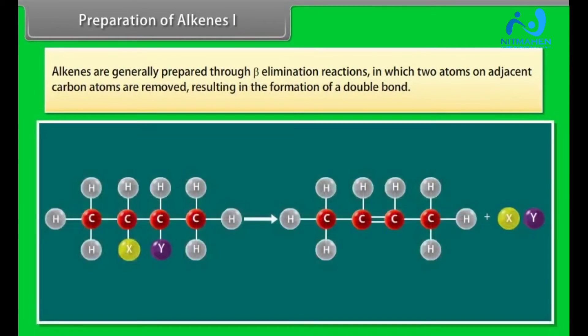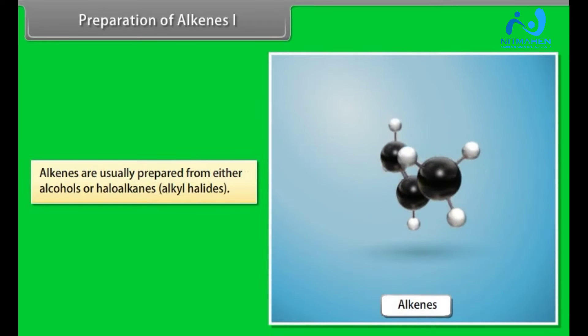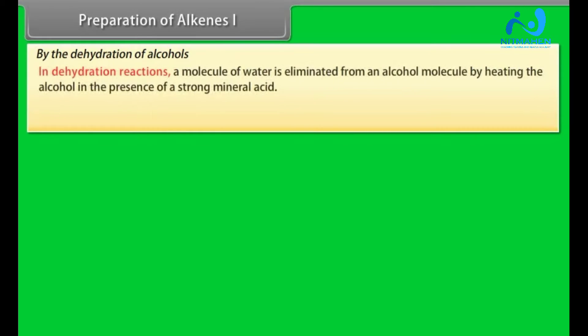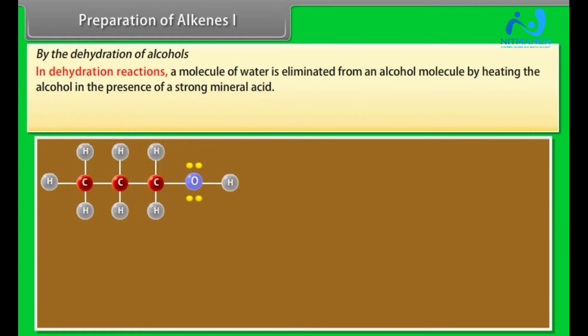Preparation of Alkenes. Alkenes are generally prepared through beta-elimination reactions in which two atoms on adjacent carbon atoms are removed, resulting in the formation of a double bond. Alkenes are usually prepared from either alcohols or haloalkanes, alkyl halides, by the dehydration of alcohols. In dehydration reactions, a molecule of water is eliminated from an alcohol molecule by heating the alcohol in the presence of a strong mineral acid.